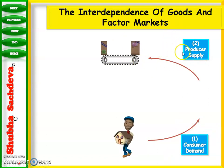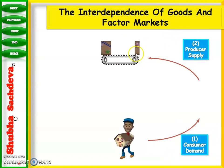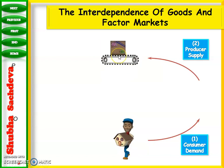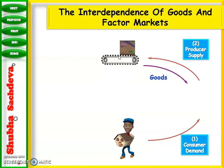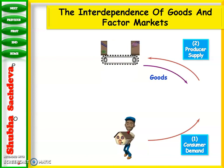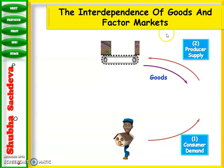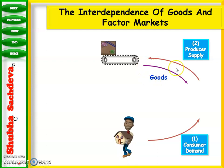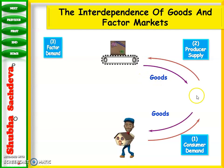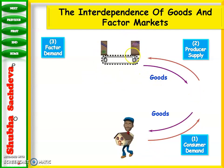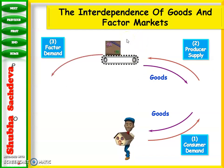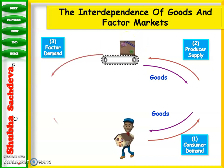For the producer to supply goods, he must have some factor services. To produce goods, the producer demands factors of production — land, labor, capital, and entrepreneurs. Meanwhile, the household supplies these factor services.